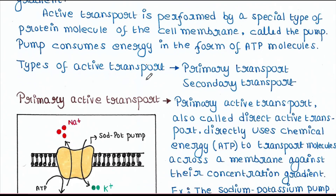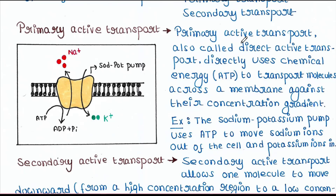There are two types of active transport: primary transport and secondary transport. Primary active transport is also called direct active transport. It directly uses chemical energy or ATP to transport molecules across a membrane against their concentration gradient, that means from low to high concentration. An example is the sodium-potassium pump, which uses ATP to move sodium ions out of the cell and potassium ions in. ATP gets hydrolyzed to produce energy, and using that energy this pump performs primary active transport.